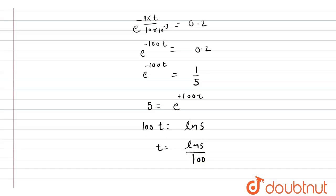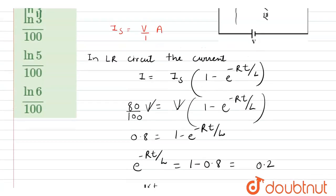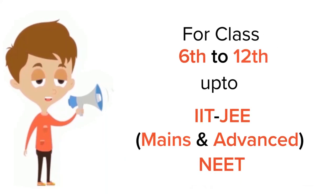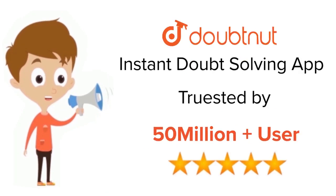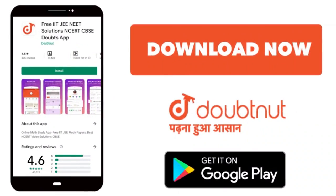So this is our answer. At this time the current will become 80% of its maximum value — that is option C. Hence option C is correct. I hope you understood this explanation. Thank you. For class 6 to 12, IIT JEE and NEET level — trusted by more than 5 crore students. Download the Doubtnut app today.